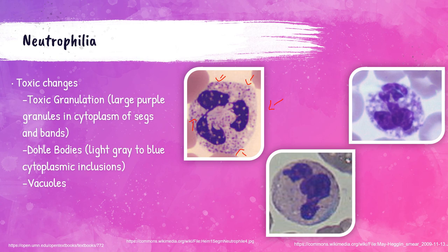Döle bodies are light gray to blue inclusions within the cytoplasm of neutrophils. This cell here is showing a döle body — you can tell this is a segmented neutrophil, and you see this kind of light blue inclusion on that neutrophil. This is a döle body.